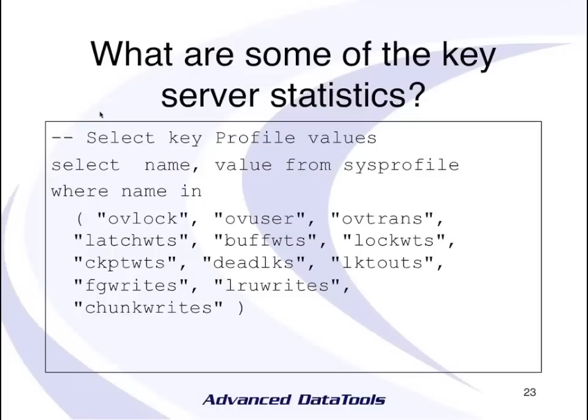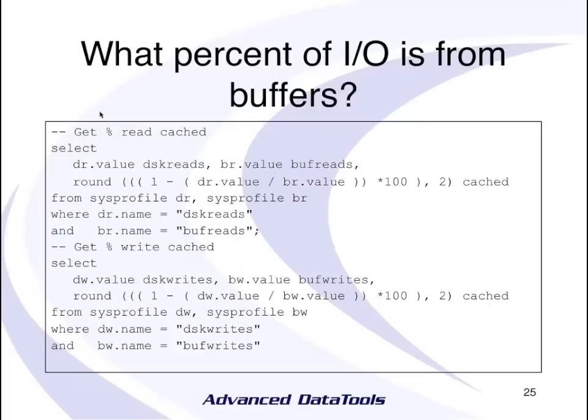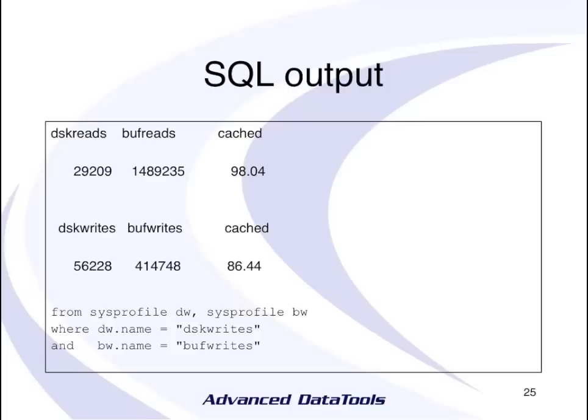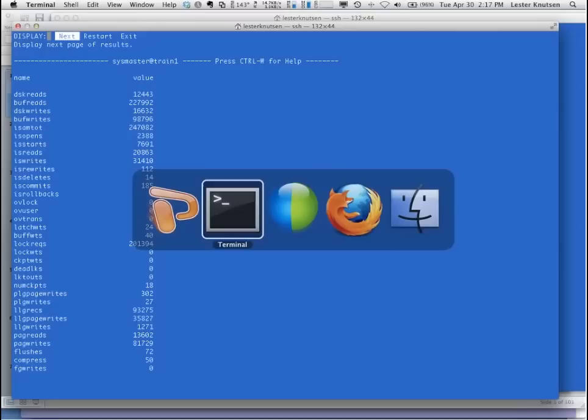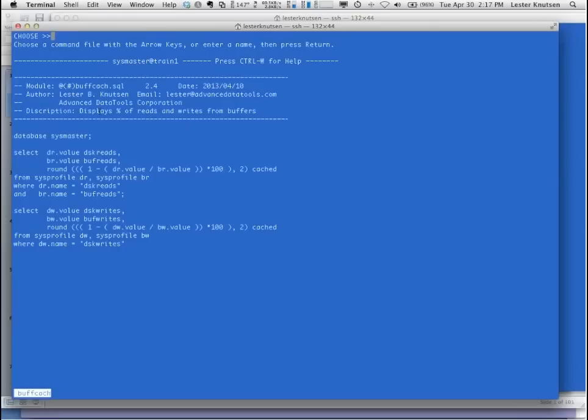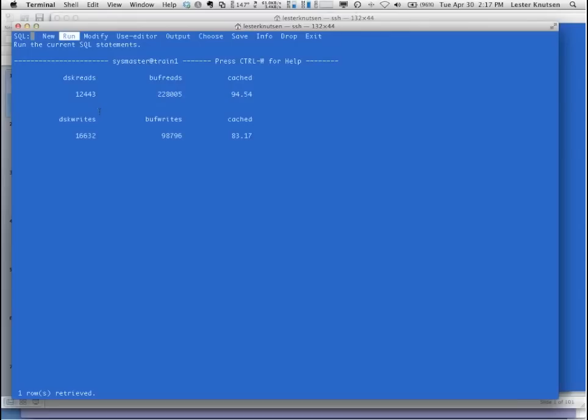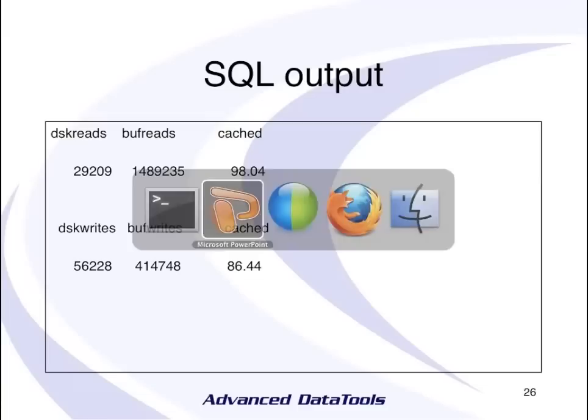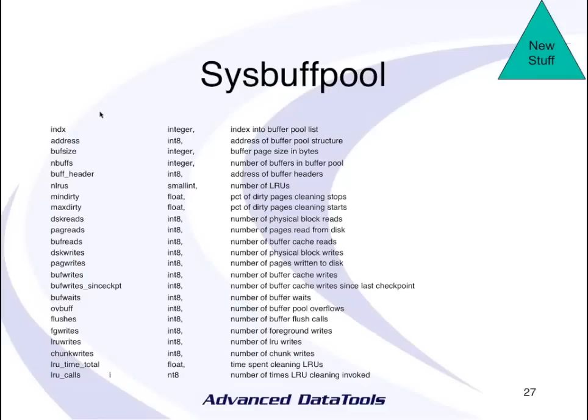One simple and useful query is: what percent of your I/O is from your buffers? A query against sysprofile can show you that, for example, 94% of reads are from buffers and 83% of writes are from buffers. In version 11 and 12, we have different buffer pools for different page sizes, so there's a new table called SysBuffPool that has buffer information by buffer pool size.